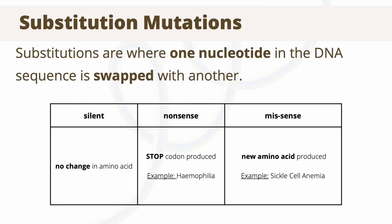Substitution mutations are where single nucleotides in the sequence are changed with a different nucleotide. This can result in three different types of alterations: silent, nonsense, or missense mutations. Silent mutations are where the amino acid being encoded has not changed as a result of the new nucleotide. Nonsense mutations result in a stop codon being expressed instead of the original amino acid — an example of this is hemophilia, as nonsense mutations occur within genes of blood clotting proteins. Missense mutations are when the nucleotide change results in a new amino acid being encoded, an example being sickle cell anemia, which can occur due to a missense mutation in the hemoglobin gene resulting in an amino acid change.